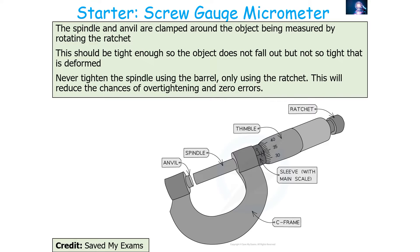The clamp should be tight enough so the object does not fall out, but not so tight that the object becomes deformed — deformation would affect the measurement, lowering accuracy. You should never tighten the spindle using the barrel, only the ratchet. This reduces the chance of overtightening, crushing the object, and introducing zero errors.